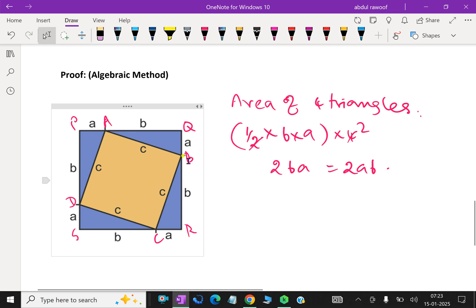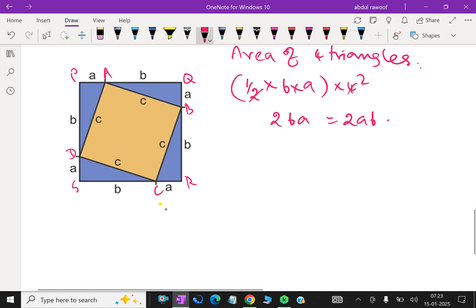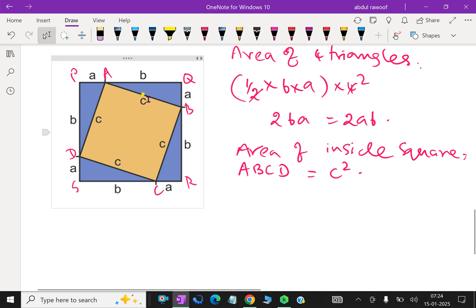Now consider inside square, what is the area of the inside square that each side is C? Area of inside square ABCD is equal to C², because square of the side is the area.